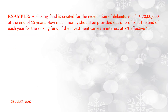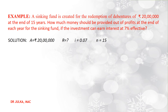One more example on sinking fund: a sinking fund is created for the redemption of debentures of Rs 20 lakh at the end of 15 years. How much money should be provided out of profits at the end of each year for the sinking fund if the investment can earn interest at a rate of 7% effective? In this example, future value A = Rs 20 lakh, interest rate i = 0.07, number of years n = 15, and we want to calculate r.